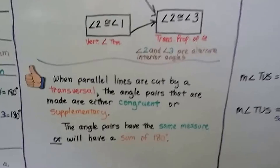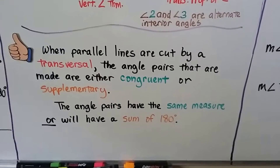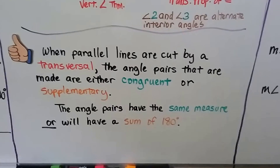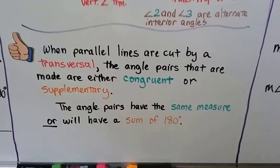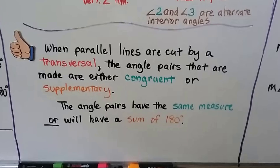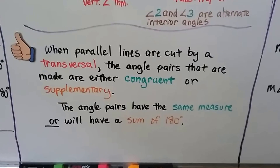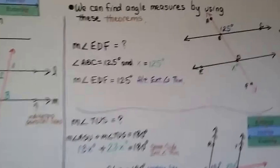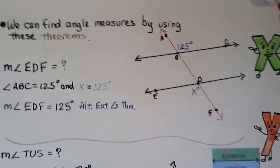When parallel lines are cut by a transversal, the angle pairs that are made are either congruent or supplementary. The angle pairs have the same measure or will have a sum of 180 degrees. We can find angle measures by using these theorems.